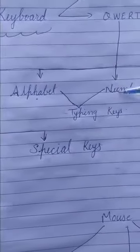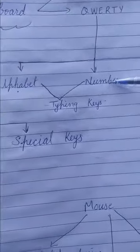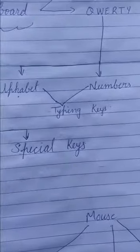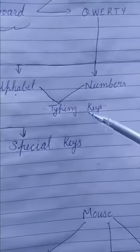So typing keys further you can divide in 2 parts. Alphabet and numbers. Both are used for typing. So these alphabet and number keys are together known as typing keys.